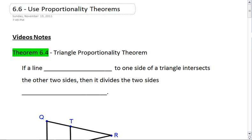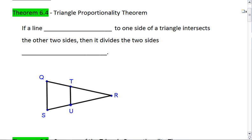Our first theorem, which is theorem 6.4, is the triangle proportionality theorem. This tells us that if a line is parallel to one side of a triangle, so QS parallel to TU, and intersects the other two sides. Well, we have that. We have TU intersecting QR at T, and SR at U. Then it divides the two sides proportionally.